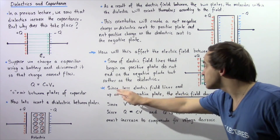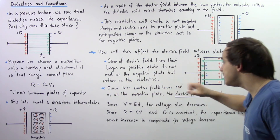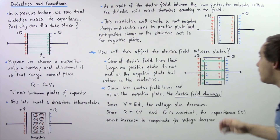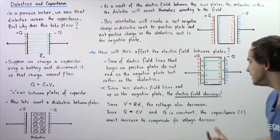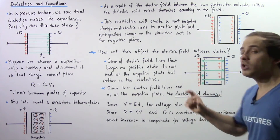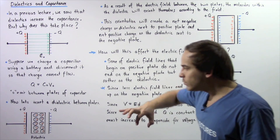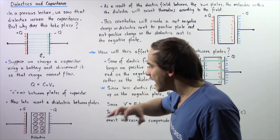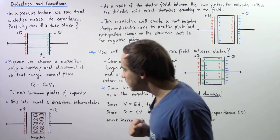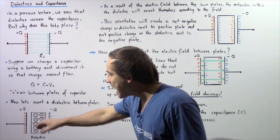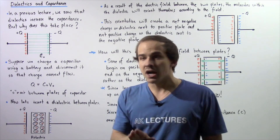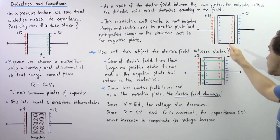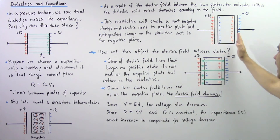And because we have fewer electric field lines that end up on the negative plate, fewer electric field lines means our electric field will decrease. So when we take that dielectric and place it into our capacitor as shown, the electric field will decrease because fewer electric field lines will end up on our opposite plate.